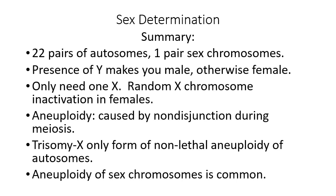The vas deferens passes through the prostate gland, which produces lubricants and fluids added to the sperm. Together, the sperm and fluids from the prostate and other glands are collectively called semen — semen contains sperm but is not the same thing as sperm. The vas deferens then connects to the urethra, which leads from the bladder. Men therefore use the urethra to expel both sperm and urine.